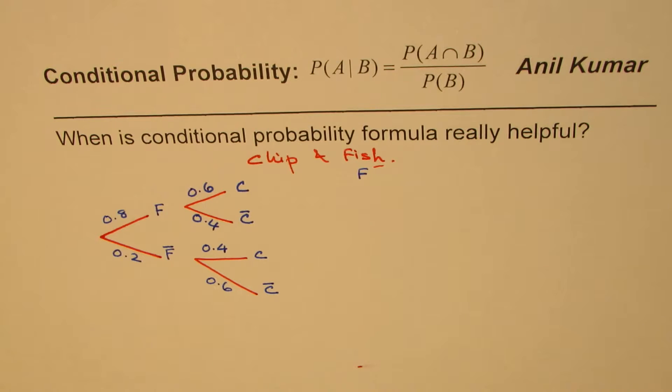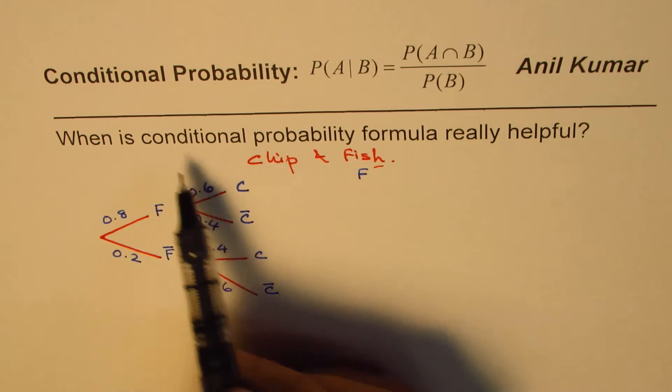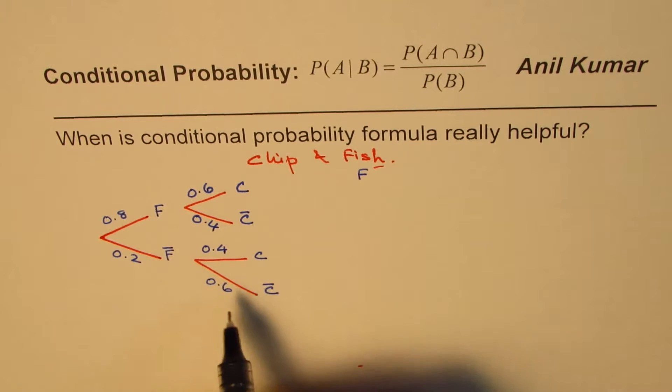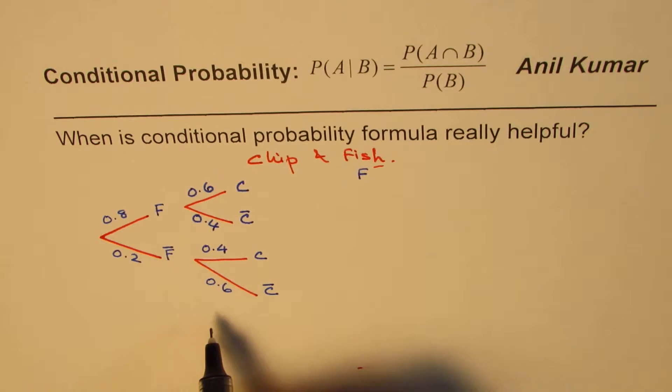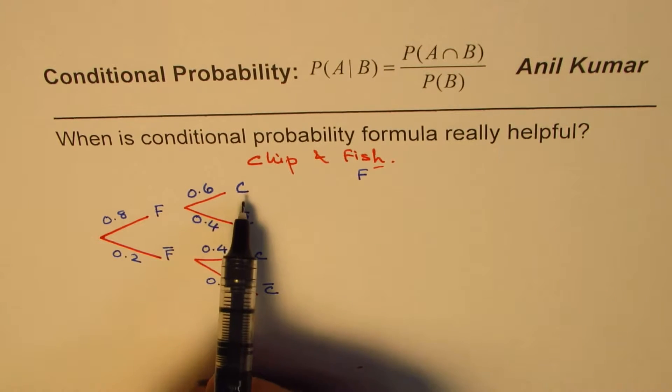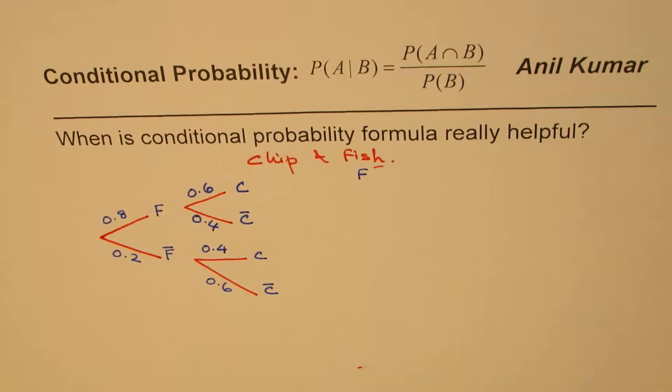If fish has not been ordered, in that case, fewer persons will order for chips. So in that case, we have 40% who will order for chips and 60% will not order for chips. So that is how we get our tree diagram. Now, we are going to answer two questions which are related to conditional probability.